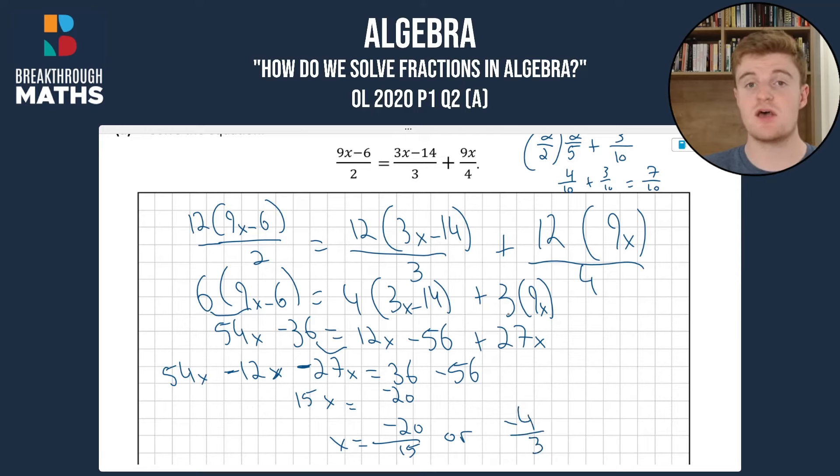So now you know how to solve fractions in algebra. The key is to make sure that your denominator is the same. You want to find the lowest common denominator, but you can either do that by just finding the lowest common denominator, or by multiplying all three of your denominators together.